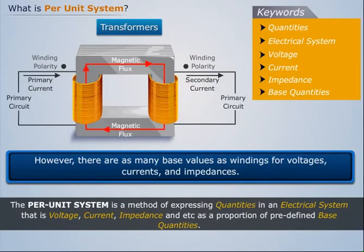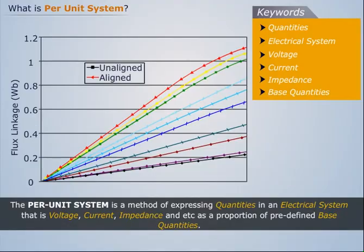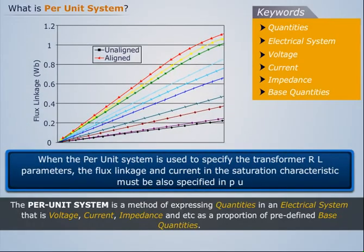The saturation characteristic of saturable transformer is given in the form of an instantaneous current versus instantaneous flux linkage curve. When the per unit system is used to specify the transformer R-L parameters, the flux linkage and current in the saturation characteristic must also be specified in PU.